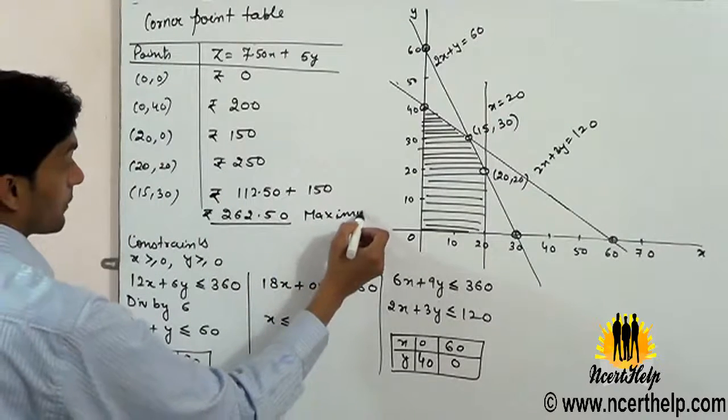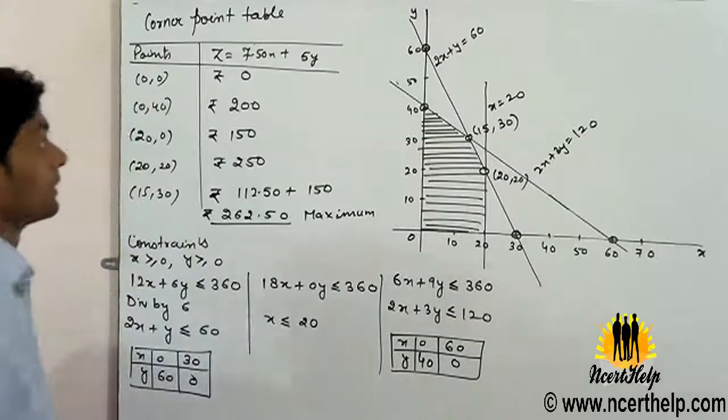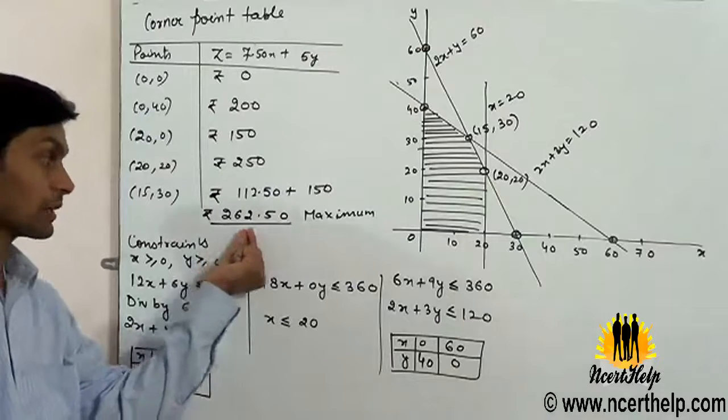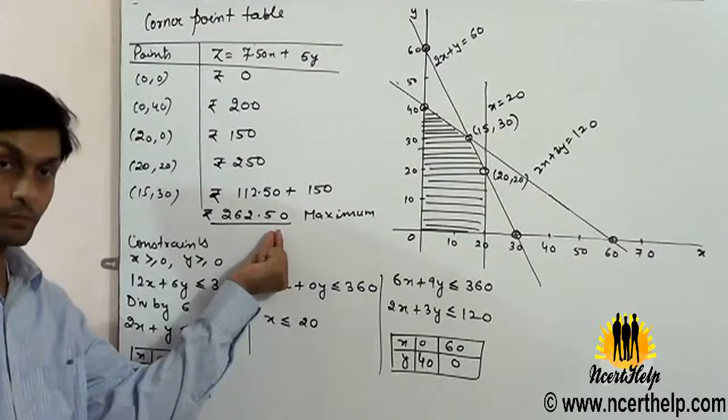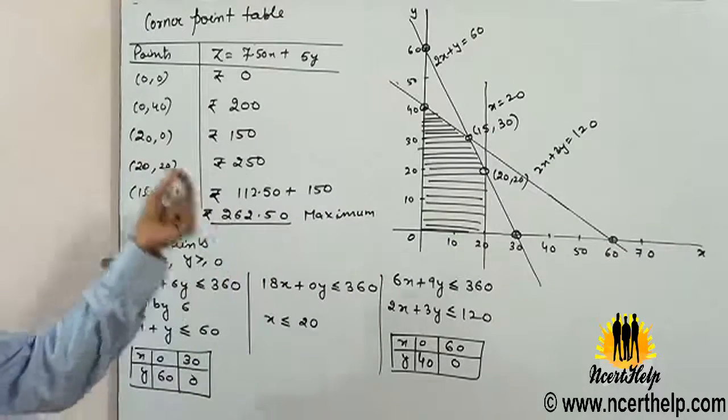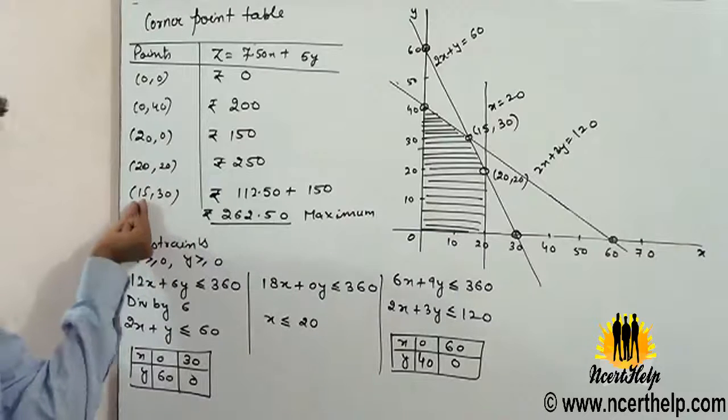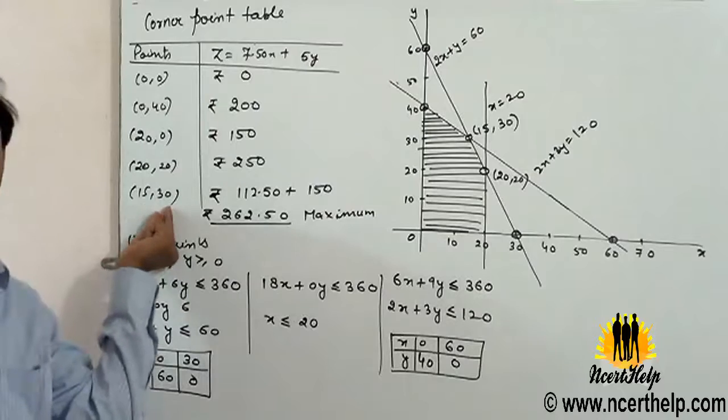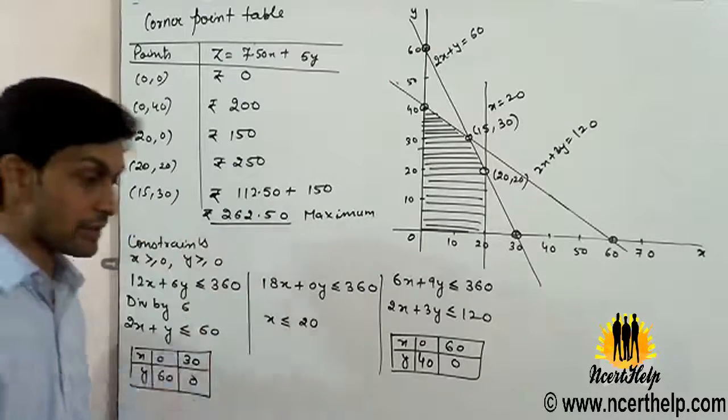Maximum: we have to prove company will get maximum profit of 262.50 rupees when it manufactures 15 toys of type A and 30 toys of type B. This is the last.